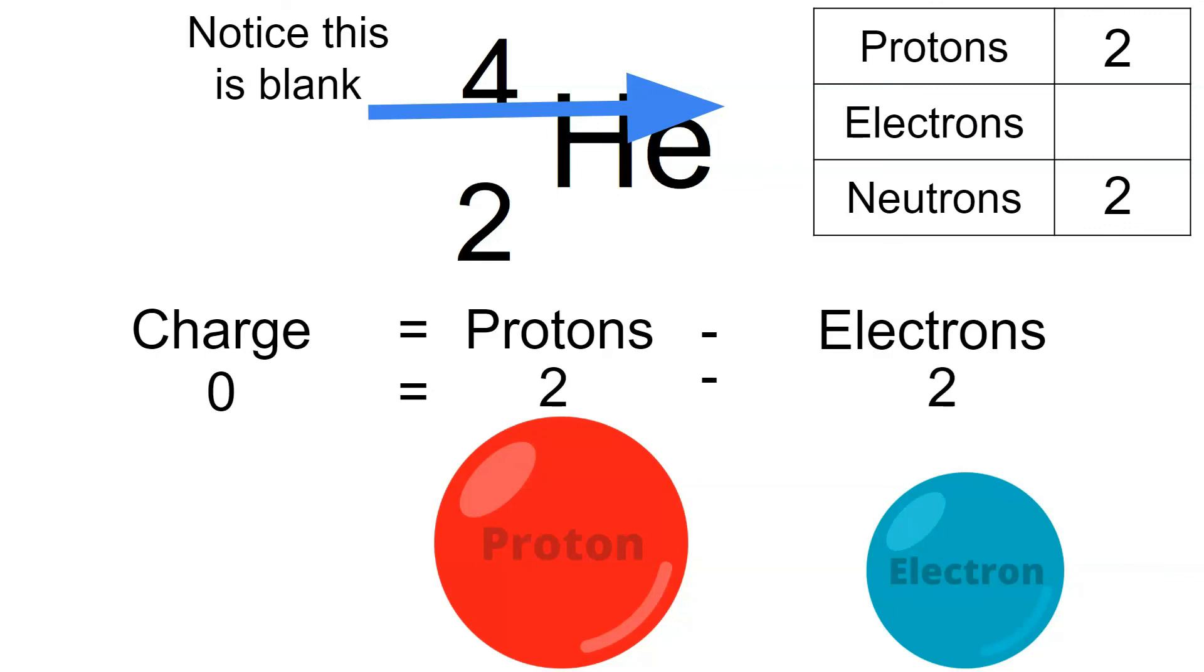So what this means is that there is an equal number of protons and electrons. So the electrons are also two.